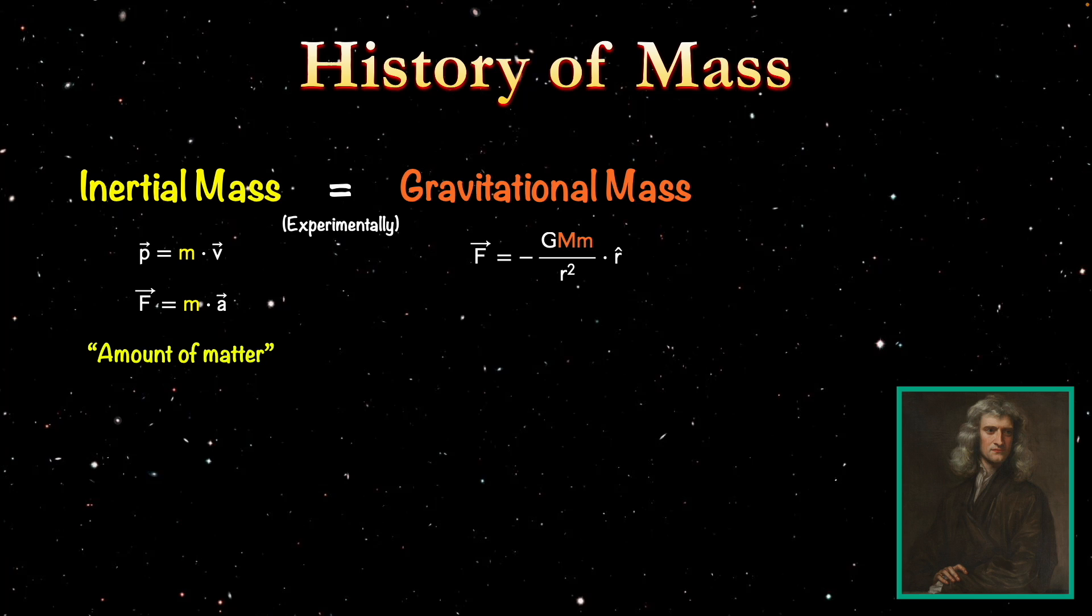Or at the very least, they're proportional to one another. Meaning that if there is a difference between these two masses, it is small enough that nobody has been able to measure it. So even though we're starting off with two different definitions of mass, in practice, until somebody manages to measure a difference between the two, we only have one.